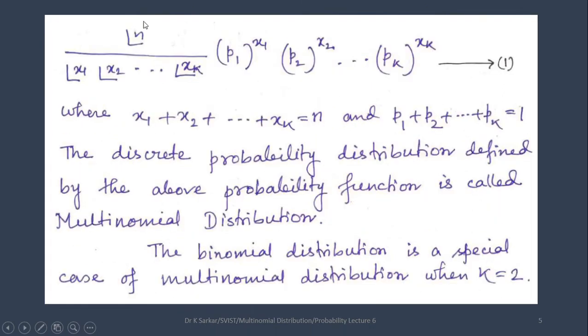is given by factorial n divided by factorial x1 multiplied by factorial x2 multiplied by up to factorial xk. The whole term is multiplied by p1 power x1 multiplied by p2 power x2 multiplied by up to pk power xk. This expression taken as 1,